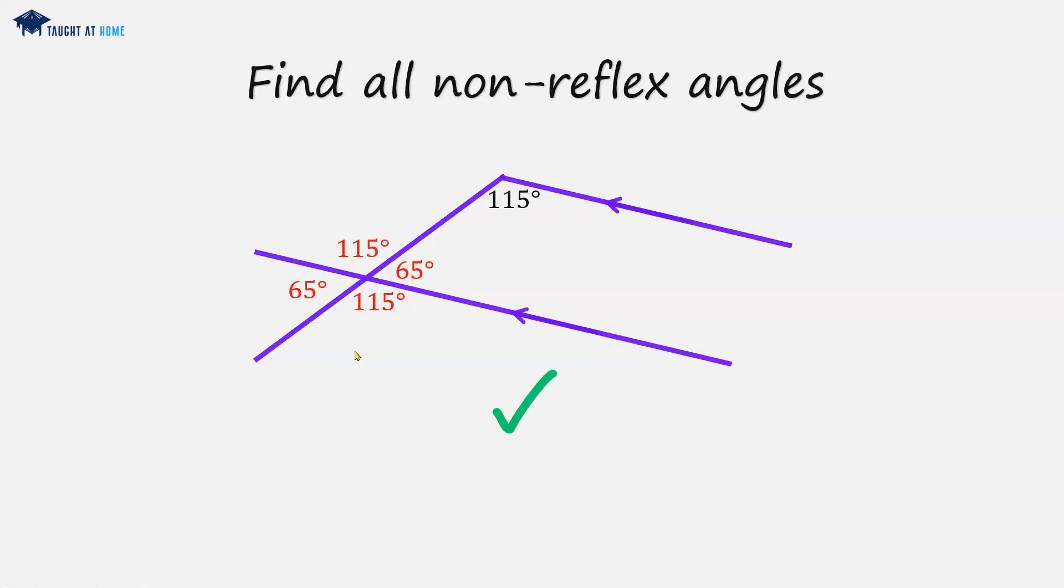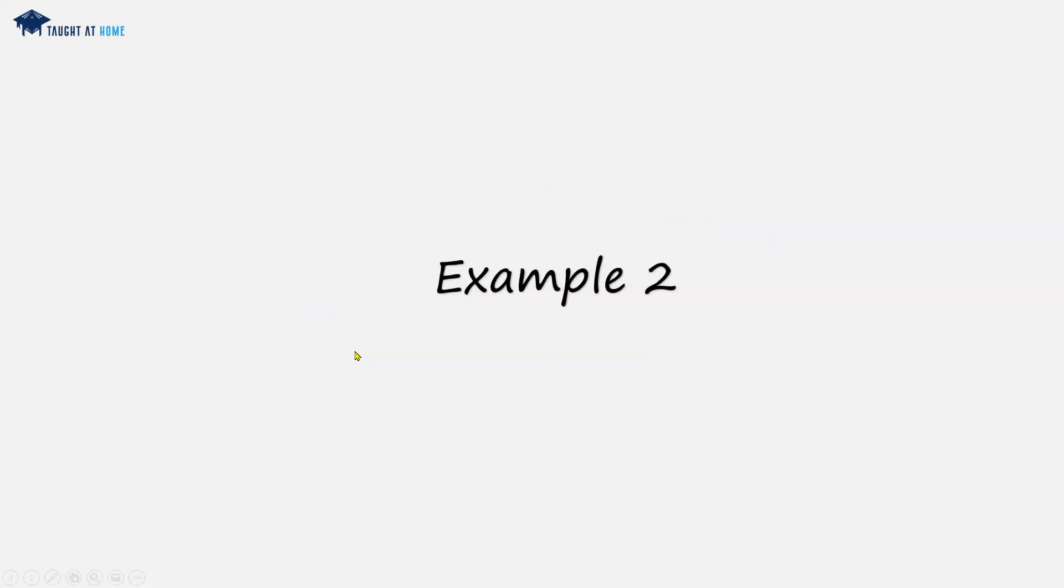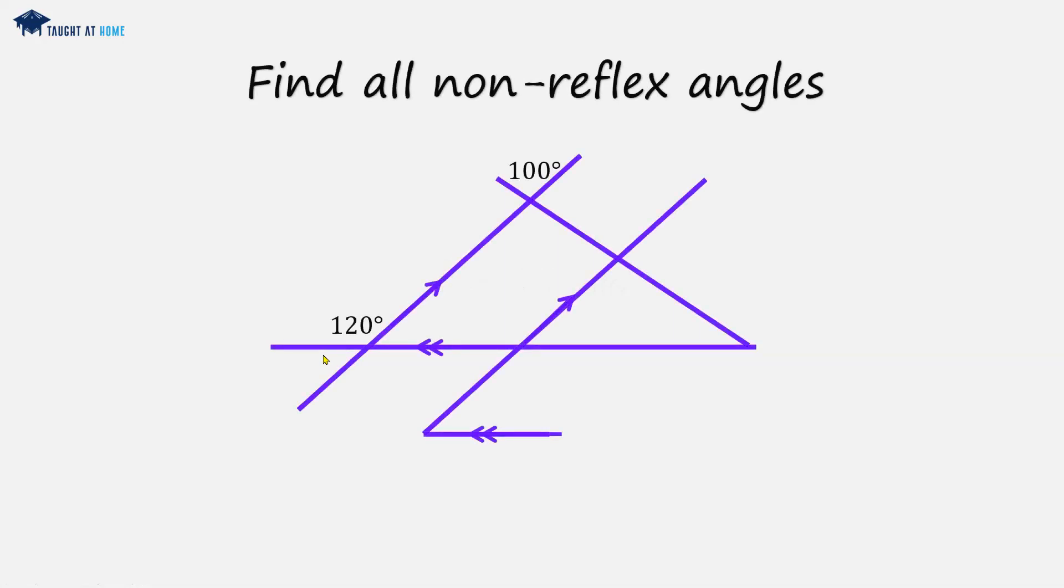Okay, so example 2 is a bit of a tricky one, but let's take this slowly. Find all non-reflex angles of this here. So it's quite a complex shape. So let's start in the bottom left corner.